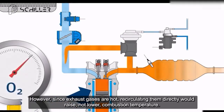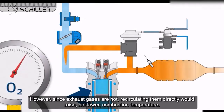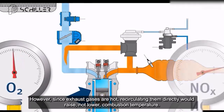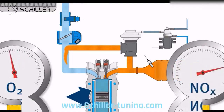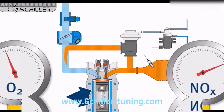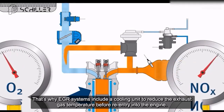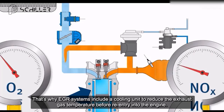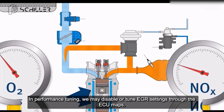However, since exhaust gases are hot, recirculating them directly would raise — not lower — combustion temperature. That's why EGR systems include a cooling unit to reduce the exhaust gas temperature before re-entry into the engine.